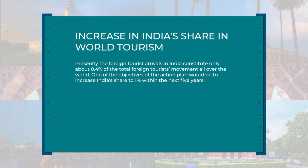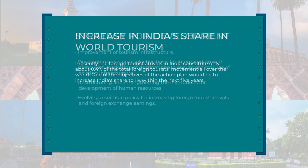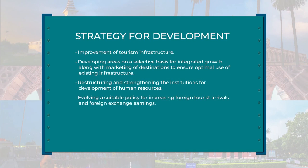Another objective was to increase India's share in world tourism. One of the objectives of the Action Plan would be to increase India's share to 1% within the next five years. The strategy for development adopted in the National Action Plan included improving tourism infrastructure, developing areas on a selective basis for integrated growth along with marketing of destinations to ensure optimal use of existing infrastructure.